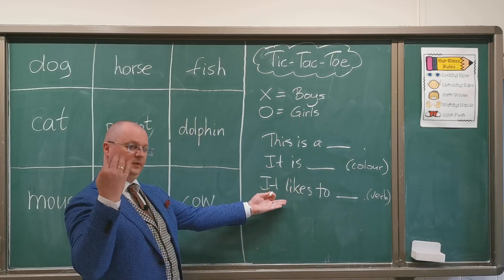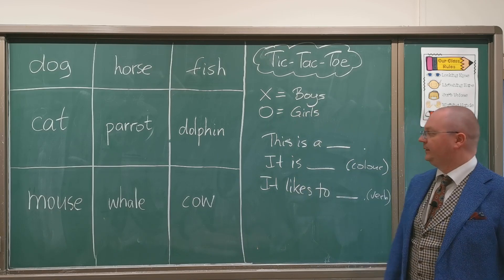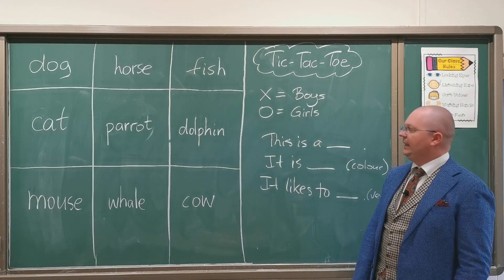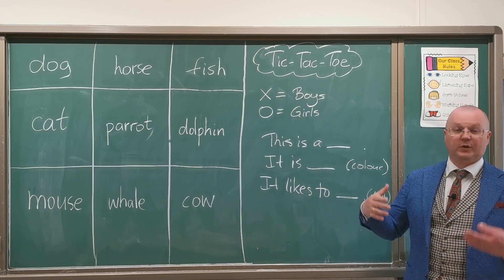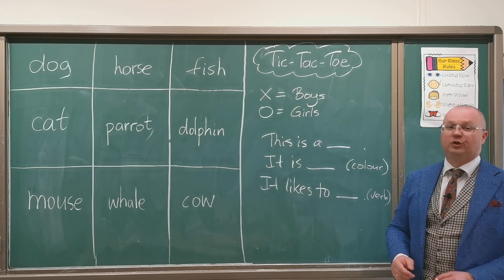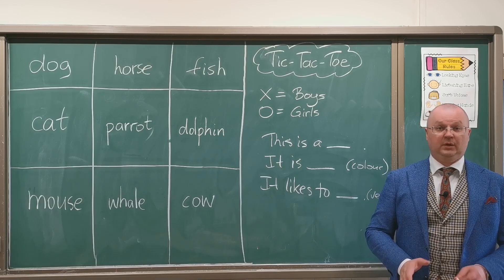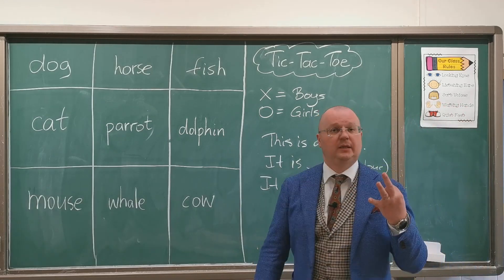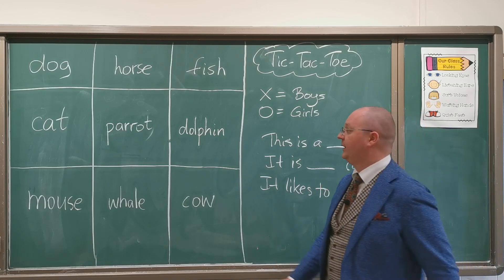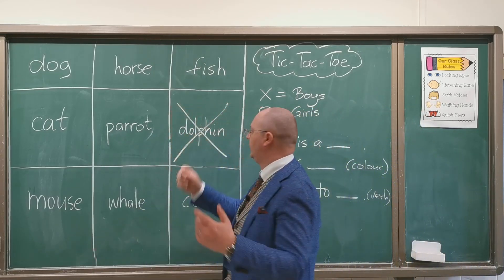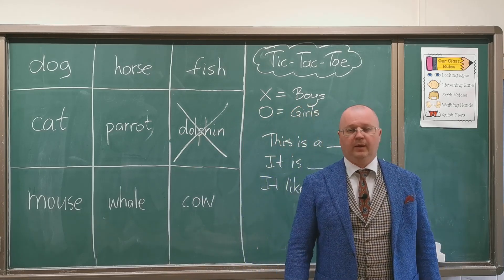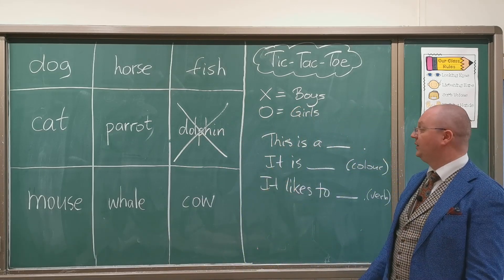So for example I would say, this is a dolphin, it is gray, it likes to swim in the water. That's already good enough. They can say three sentences together, that's perfect. And then what you do, you claim the square and then the turn goes to the next team.